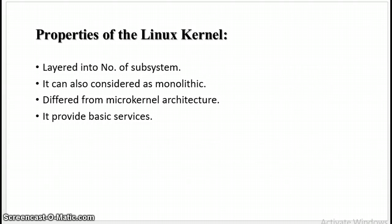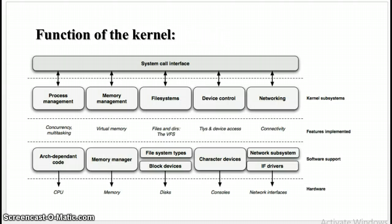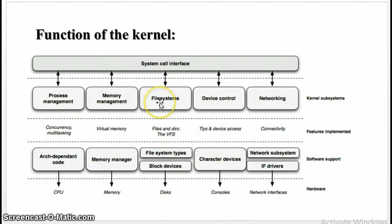Now we see the functions of the Linux kernel. This image shows all the functionality of the Linux kernel. First is the system call, second is the process management, third is memory management, fourth is file system, fifth is device control, and sixth is networking.